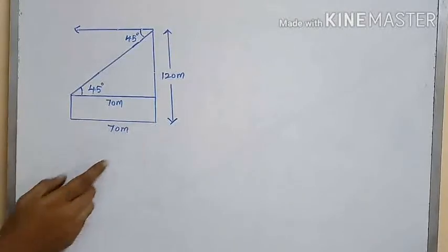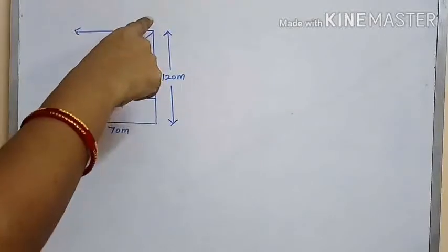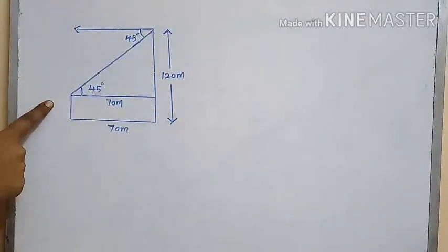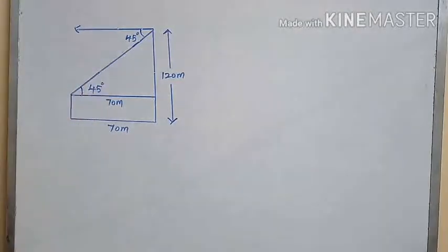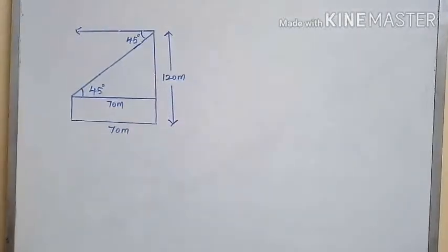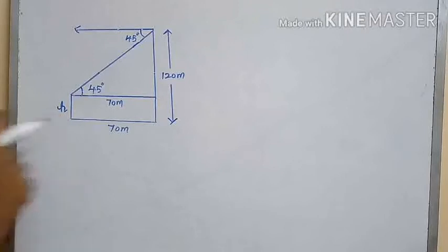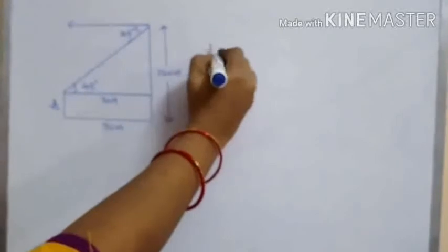Observe this diagram. This is the horizontal distance of 70 meters between the two buildings. The angle of depression of the top of the first building when seen from the top of the second building is 45 degrees. The height of the second building is 120 meters. Let us represent the height of the first building as H.